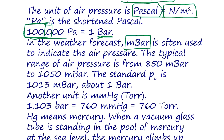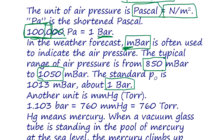Air pressure ranges from about 850 millibar to 1050 millibar — that's the range observed in weather forecasts. Atmospheric pressure is usually around one bar, or 1000 millibar.